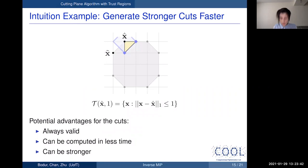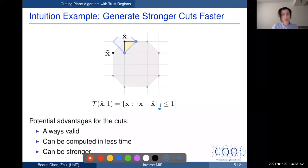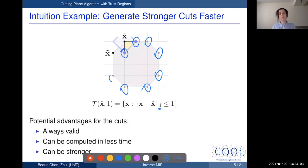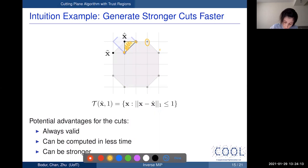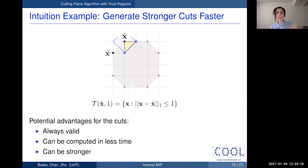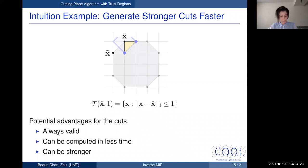With a trust region of double size using the L-infinity norm, we directly identify the correct point in the first iteration and converge immediately. Using the L1 norm gives a rotated square trust region. In that example, two blue interior points in the restricted feasible region have stronger cut generation potential than all six extreme points of the original forward feasible region, and the restricted region has only two extreme points versus many in the original.